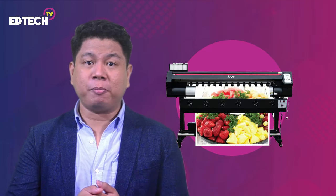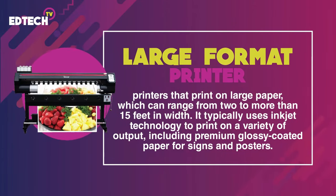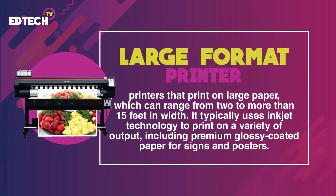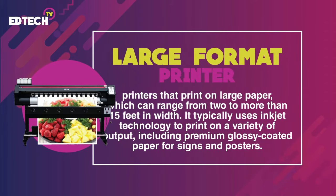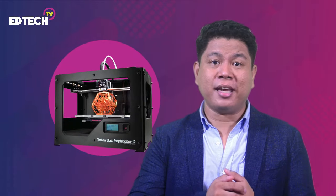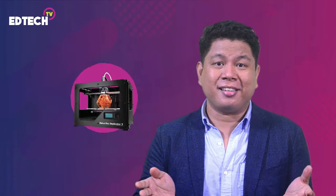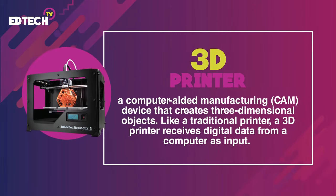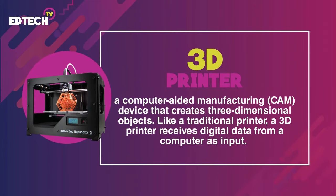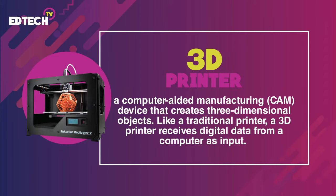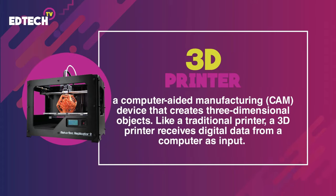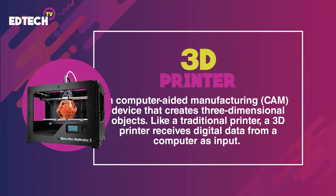We also have large format printers, which print on large paper ranging from two to more than 15 feet in width. They typically use inkjet technology to print on a variety of output, including premium glossy coated paper for signs and posters. We also have sophisticated printers like the 3D printer. A 3D printer is a computer-aided manufacturing or CAM device that creates three-dimensional objects. Like a traditional printer, a 3D printer receives digital data from a computer as input. However, instead of printing on paper, a 3D printer builds a three-dimensional model out of a custom material.